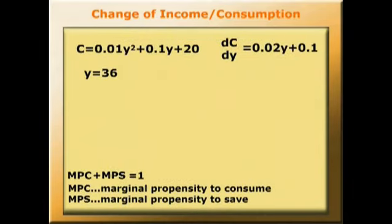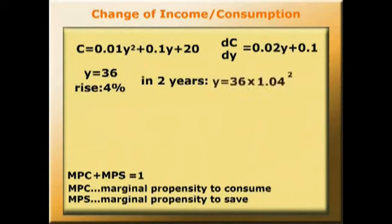Now we'll think about what will happen to that if we have a rising income level. If incomes are to rise at about 4% per annum in Slovenia, which seems reasonable given the trend, then in two years' time it will be that y equals 36 times 1.04 squared, which gives us 38.94 to two decimal places. So we now know the new level of national income in Slovenia.